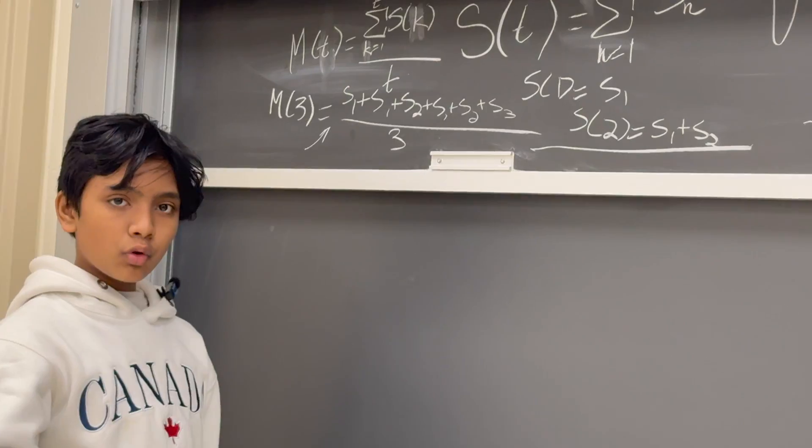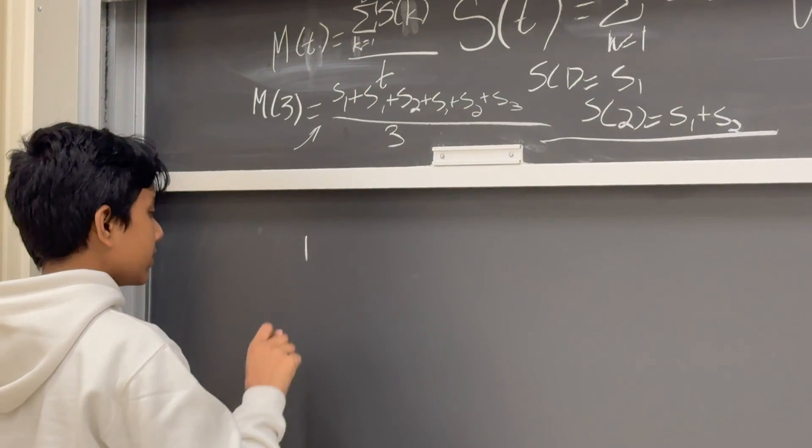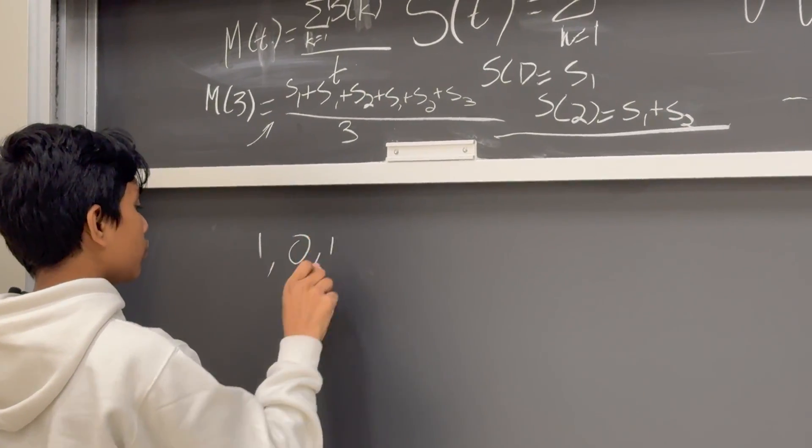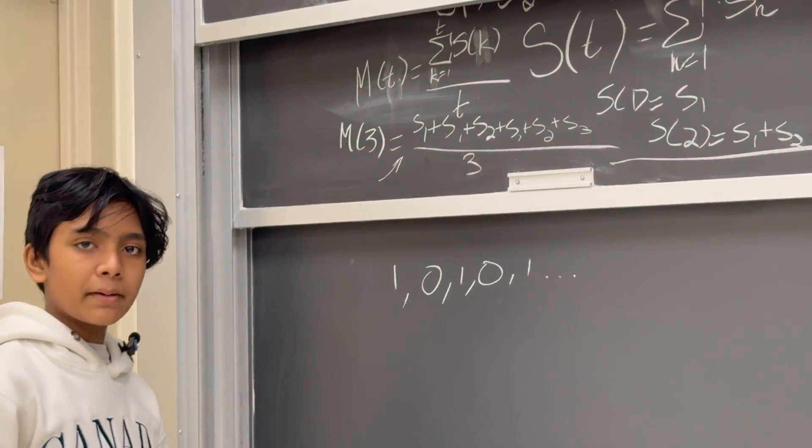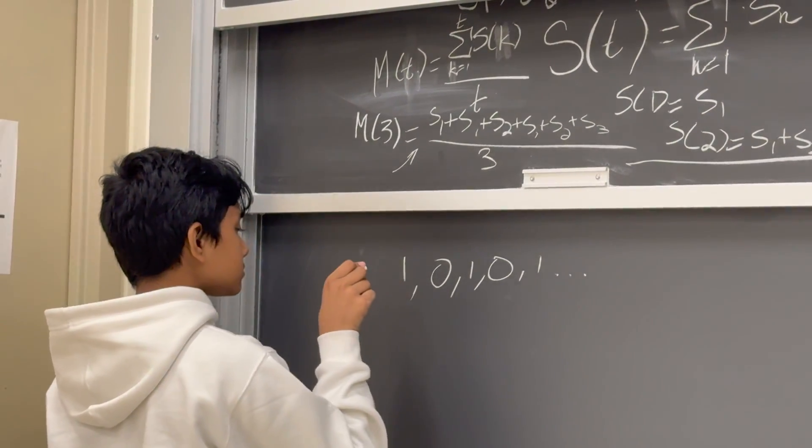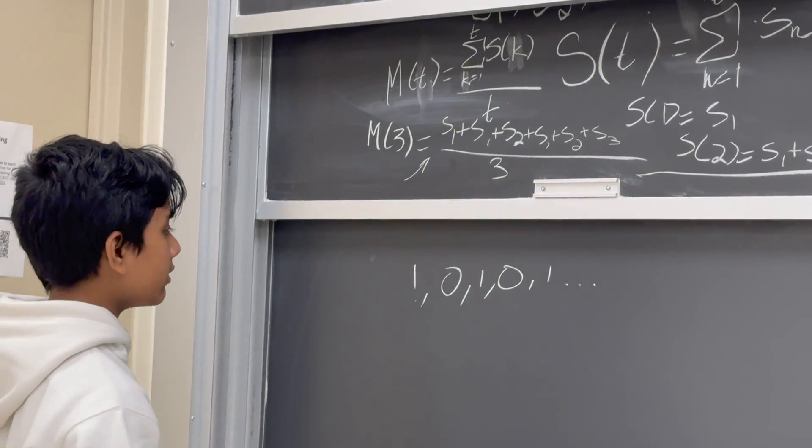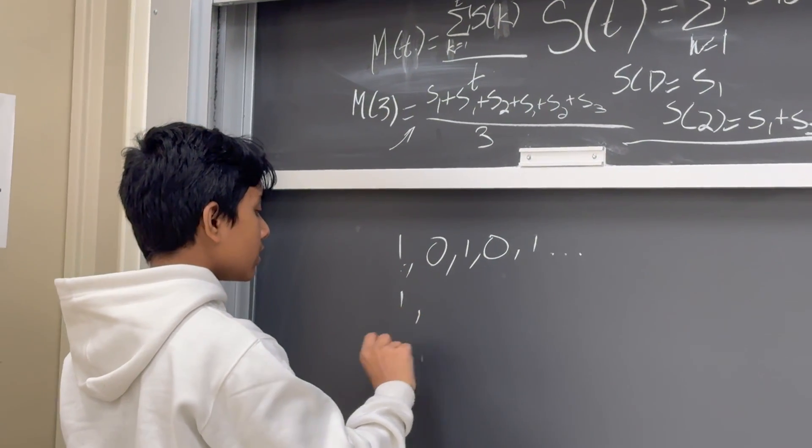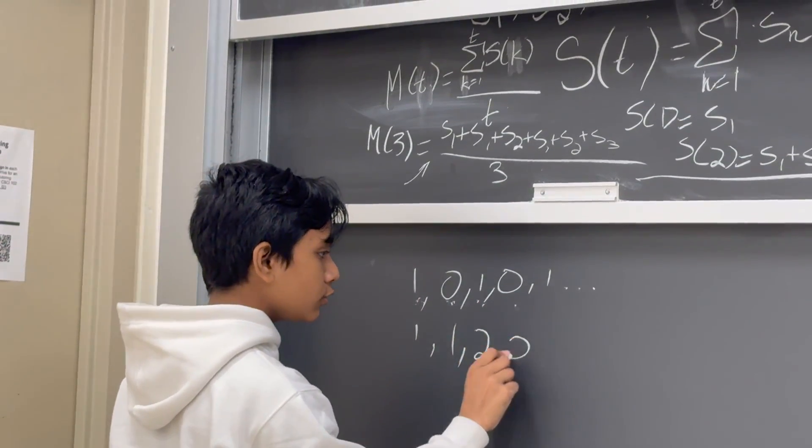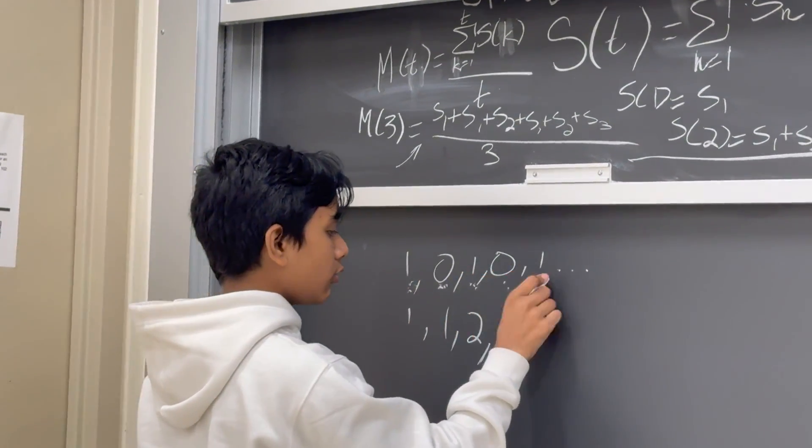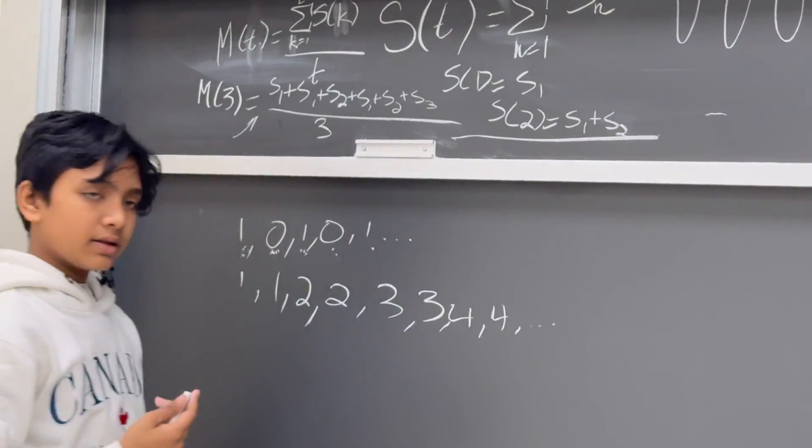But now, it will actually approach something for non-convergent sums as well. For example, the partial sum function here is going to be 1, 0, 1, 0, et cetera. And this doesn't converge easily. But let's see what happens when we take the arithmetic mean. Let's first see what happens when we just take the sum of the sums. So, 1, 1 plus 0 is 1, 1 plus 0 plus 1 is 2, then 2, 3. And I think you can see a pattern here, which continues endlessly.